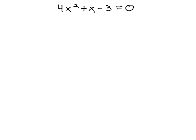In this problem, we're going to take a look at how we can solve 4x squared plus x minus 3 equals 0.